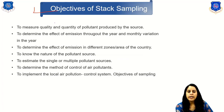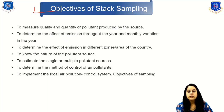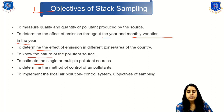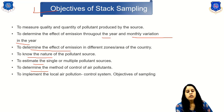The objectives of stack sampling are: to measure the quality and quantity of pollutants produced by the source; to determine the effect of emissions throughout the year and the monthly variation; to determine the effect of emissions in different zones and areas of the country; to know the nature of pollutants at the source; to estimate single or multiple pollutant sources; to determine the method of control of air pollutants; and to implement the local air pollution control system.